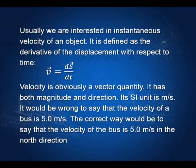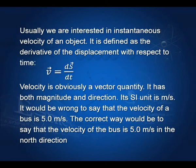As I have been saying, velocity is a vector because both sides of the equation are vectors — on this side, s is a vector; on this side, velocity must be a vector. Therefore, it would be wrong to say that the velocity of a bus is 5.0 meters per second. The correct way would be to say that the velocity of the bus is 5.0 meters per second in the north direction. Remember, a vector needs both magnitude and direction for its description.